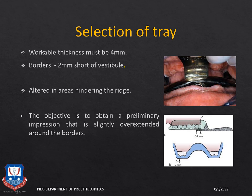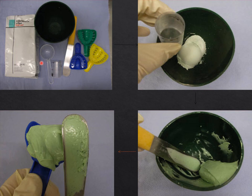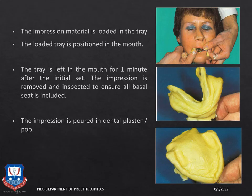When mixing alginate impressions, use a curved spatula and rubber bowl. Dispense the powder first, then water in a 1:1 ratio. Mix using a figure-of-eight motion, spreading the mix against the bowl walls to get a creamy, thick, viscous impression material. The impression is recorded using an open mouth impression technique, with the operator performing all border movements to record the border extensions. Having accurate primary impressions with proper flange extensions ensures easier secondary impression making.